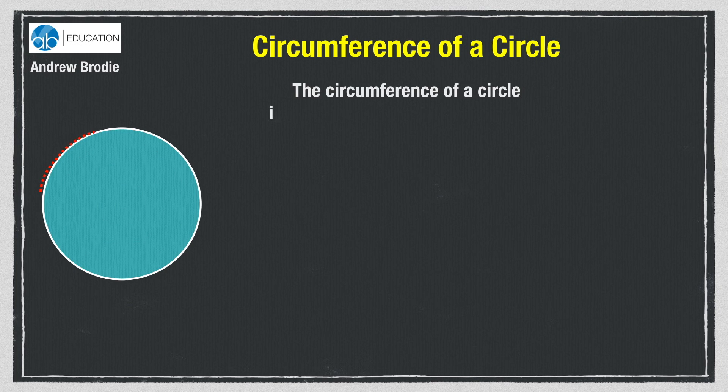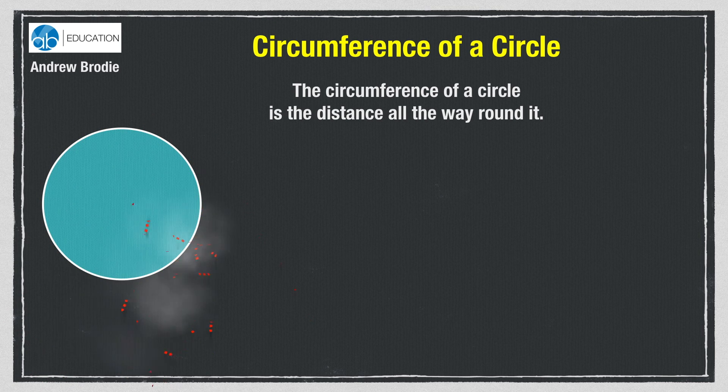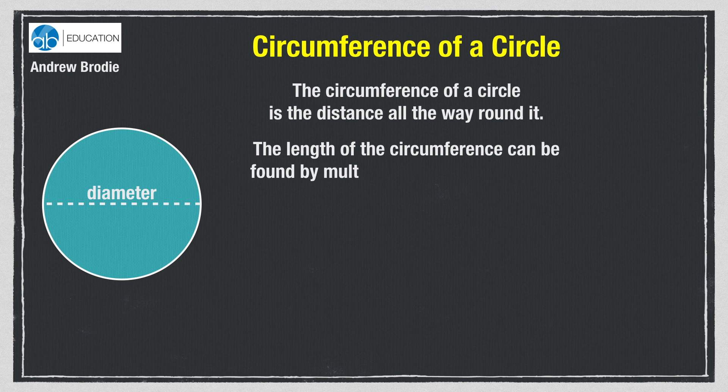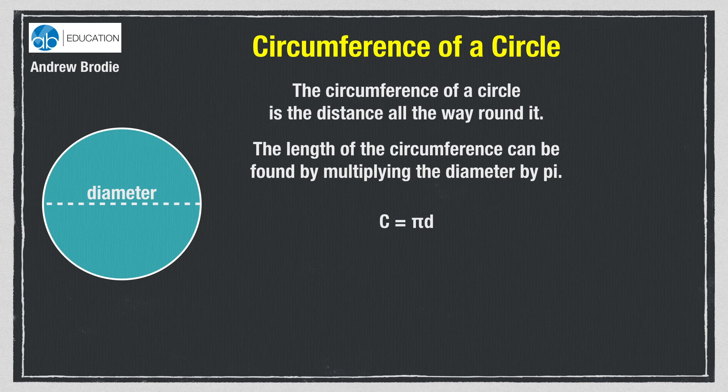The circumference of a circle is the distance all the way round it. The length of the circumference can be found by multiplying the diameter by a special number called pi. This is the symbol for pi. The formula we use is C for circumference equals pi times the diameter.